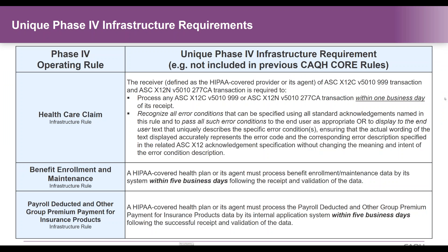There are extended requirements unique to some transactions. The healthcare claim has specific requirements around the 999 and the 277 CA — the transaction must be acknowledged within one business day. Whereas the 820 and the 834 transaction — the benefit enrollment/maintenance and the premium payment — those have to be acknowledged within five business days. So there's a variance: one day for claims, five days for the 820 and the 834 transaction.